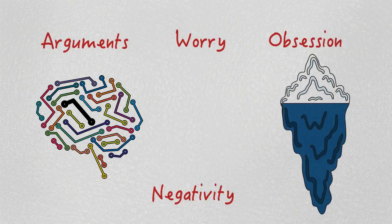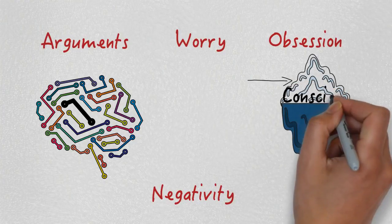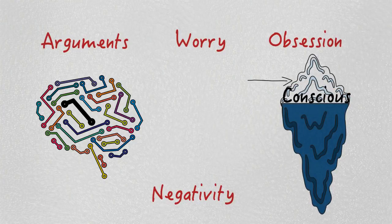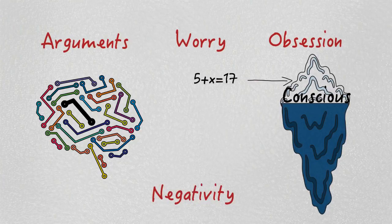Think about the tip of an iceberg, which is the smallest part. This represents all the things that we can choose consciously, such as solving a math problem.